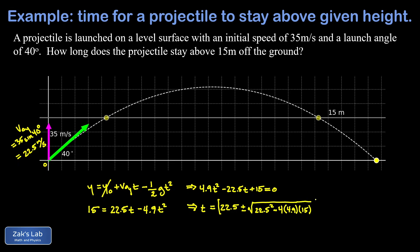Then we have minus four times a, which is 4.9 times c, which is 15. And that whole thing is divided by twice a, which is just 9.8. So divided by 9.8.